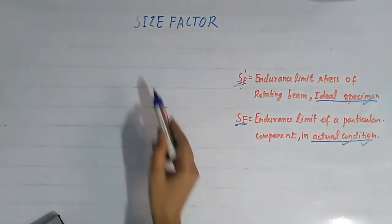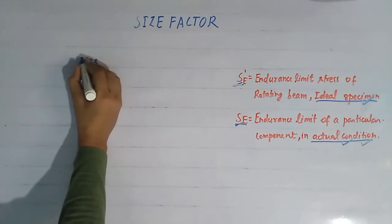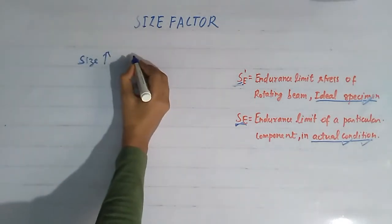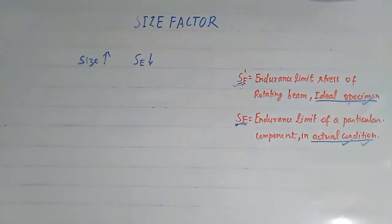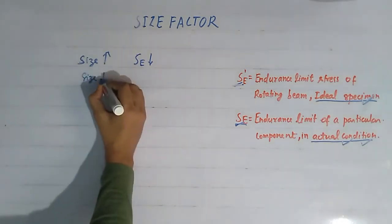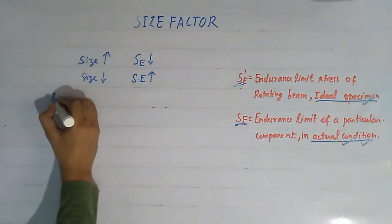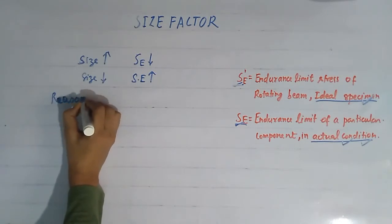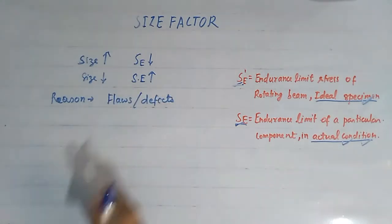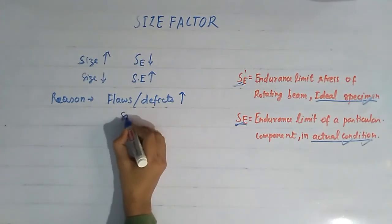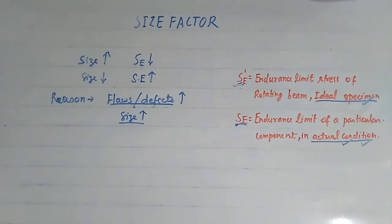In this video we will establish the relation between Se and Se' using the size factor. As I mentioned in the previous video, when the size of the component increases, the endurance limit decreases, and as the size decreases, the endurance limit increases. The reason for this is that the number of flaws — that is, the number of defects in the component — increases as the size increases, which causes the endurance limit to decrease.